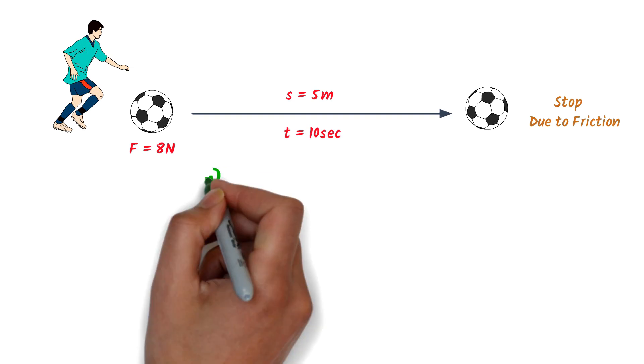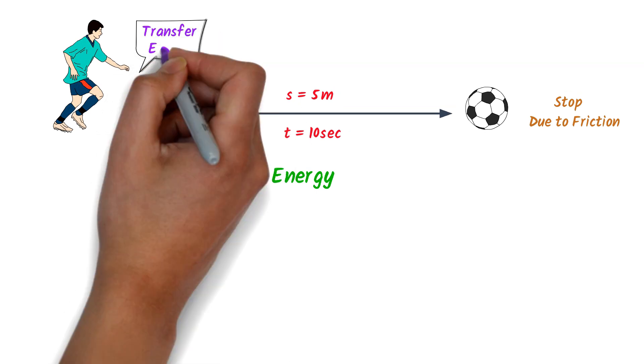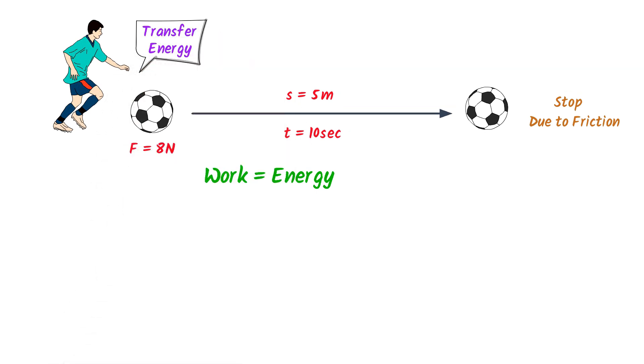Now we know that work and energy is the same thing, are two faces of the same coin. In physics, we know that when we exert force and it displaces an object in its direction, we say that energy is used, our work is done. Here, we have delivered or transferred some energy to the ball, that's why the ball is displaced.